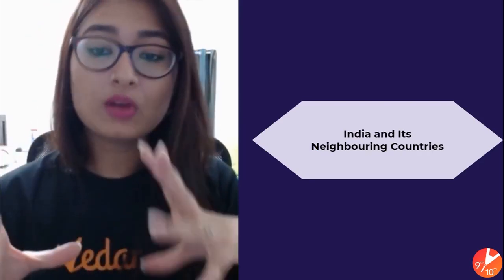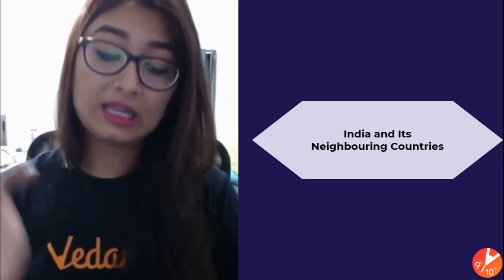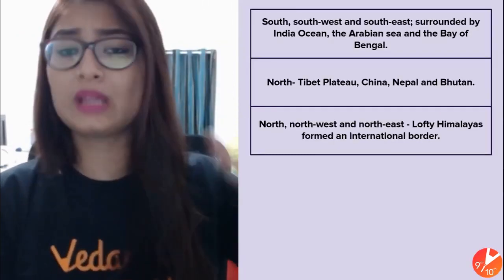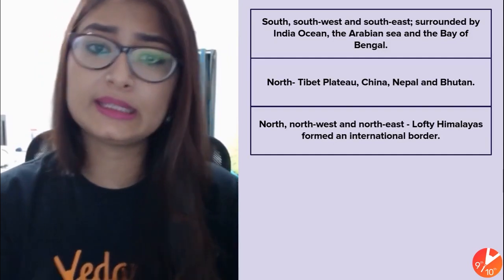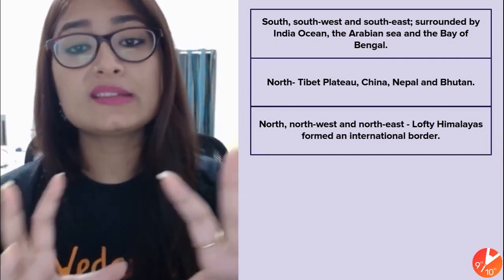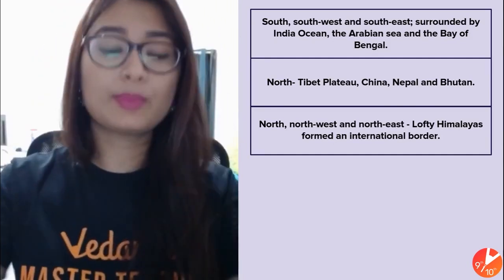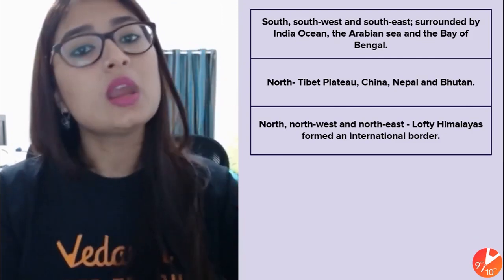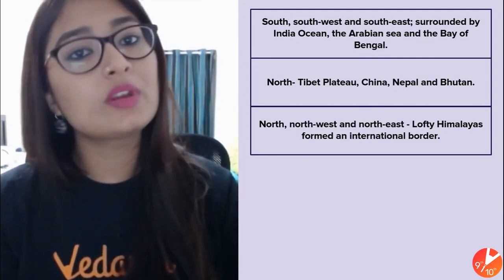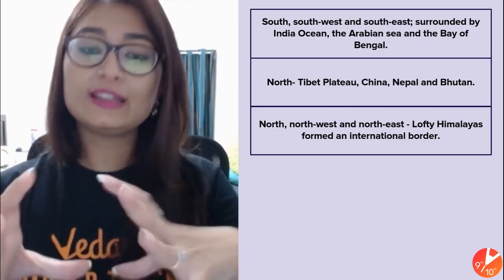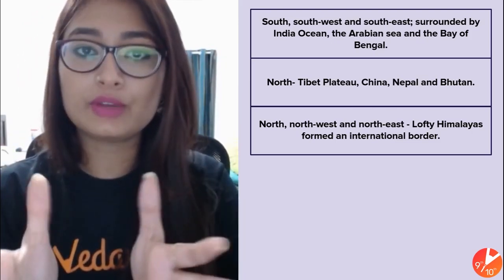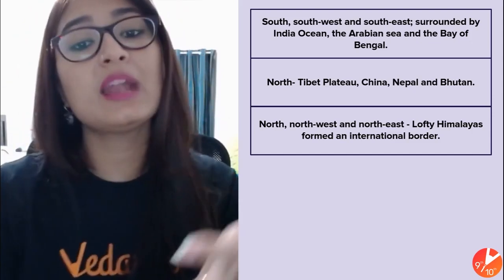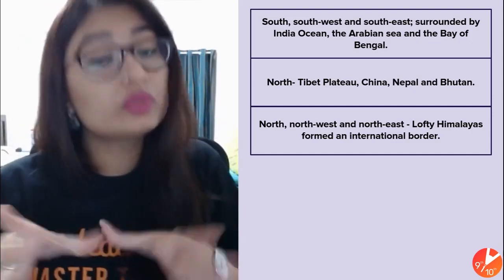Now, let's talk about the neighboring countries. In the south, southwest, and southeast, we have no immediate neighbor — we are surrounded by seas. That is what qualifies us as a peninsular country: three areas of water — the Indian Ocean, the Arabian Sea, and the Bay of Bengal.